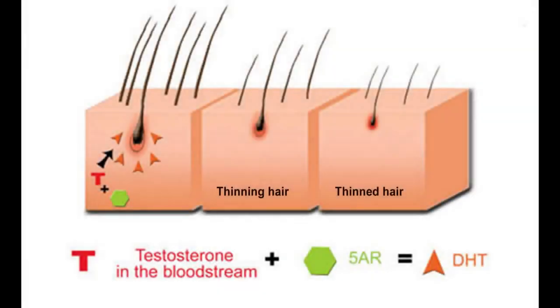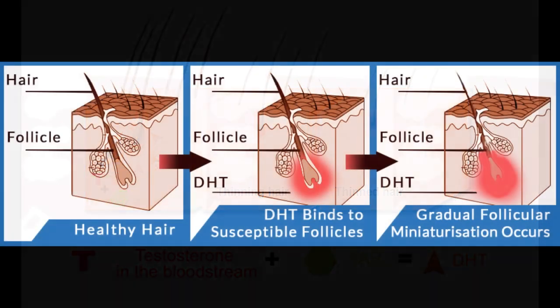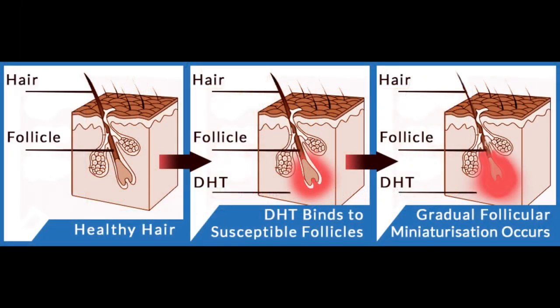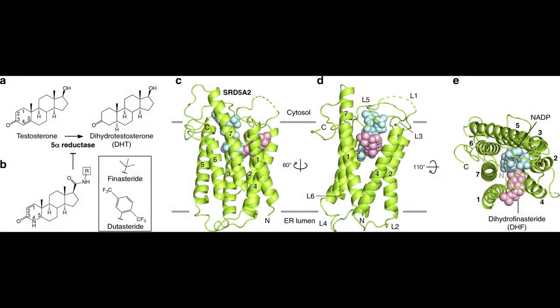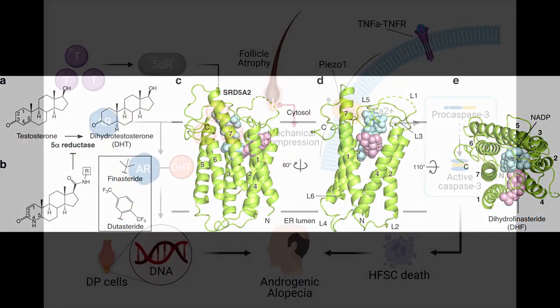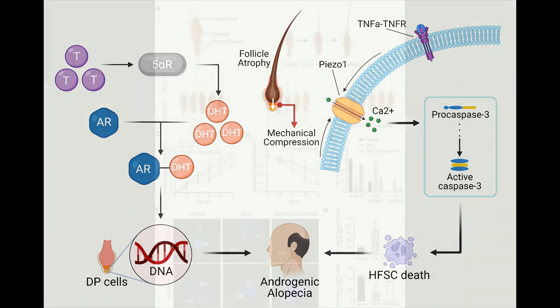Dihydrotestosterone, or DHT, is central to the process of androgenetic alopecia, more commonly known as male pattern baldness. While both serum and scalp DHT levels are significant when studying this condition, they serve different purposes and are reflective of how different biological processes occur.